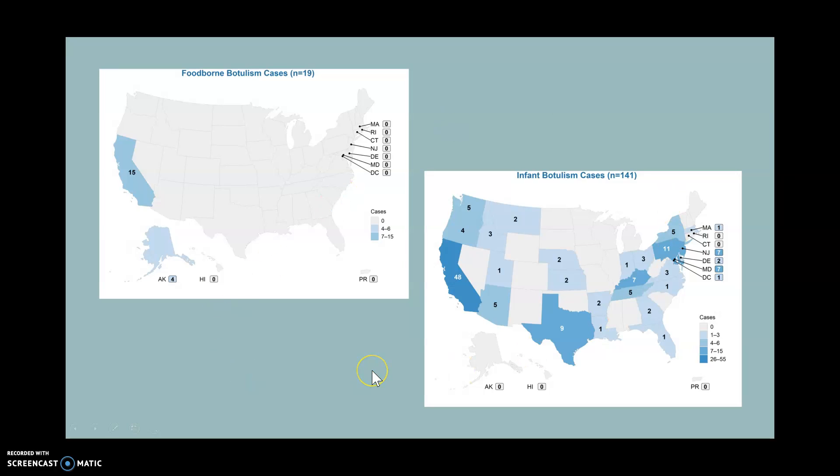So this is just a slide with some maps here. I want to say late 2010s. This is a foodborne botulism case, there's only 19 of them, but mainly in California. Alaska as well. This one's for infant botulism, there was 141 cases this year. So that's kind of how it's spread out.